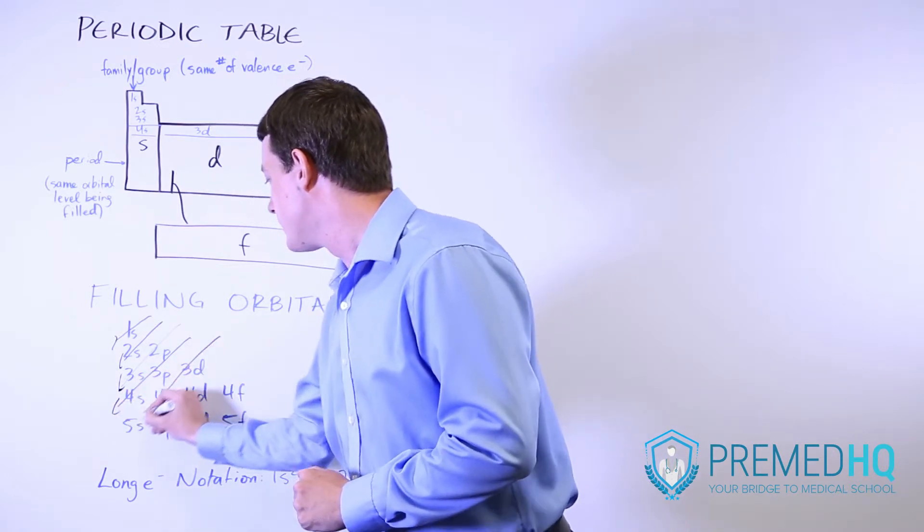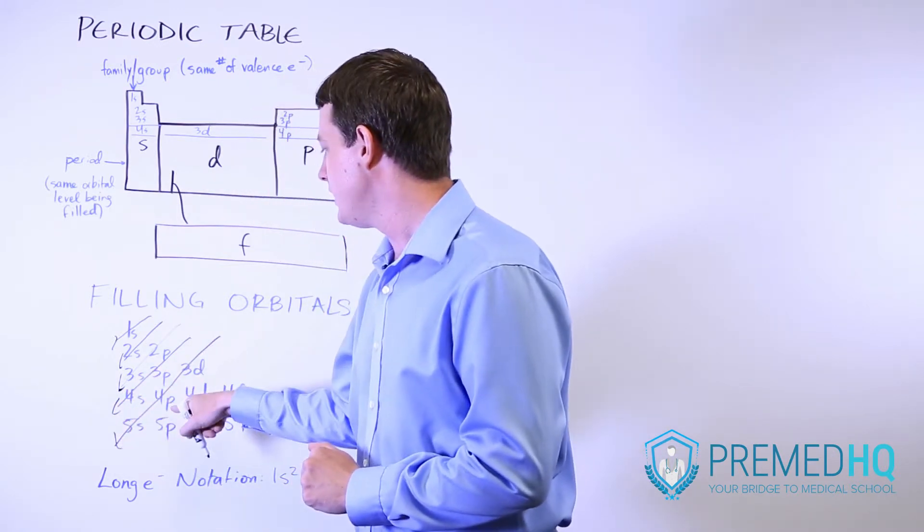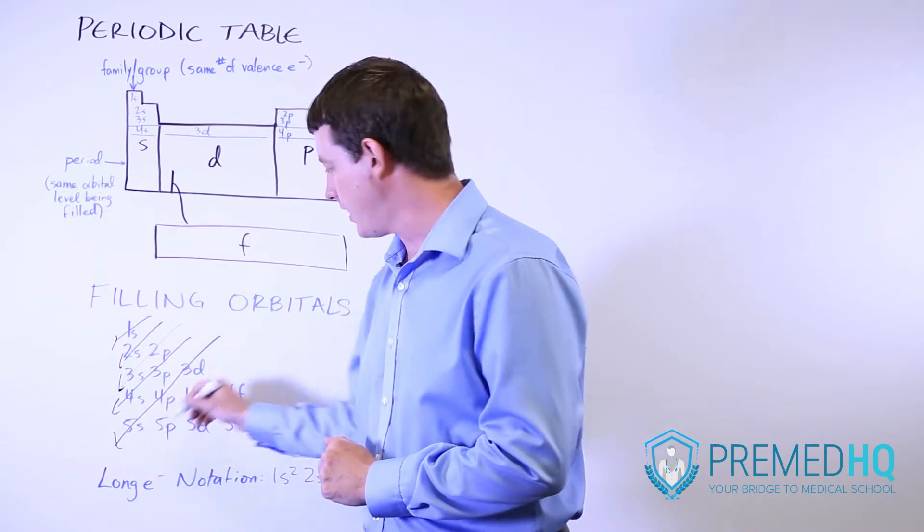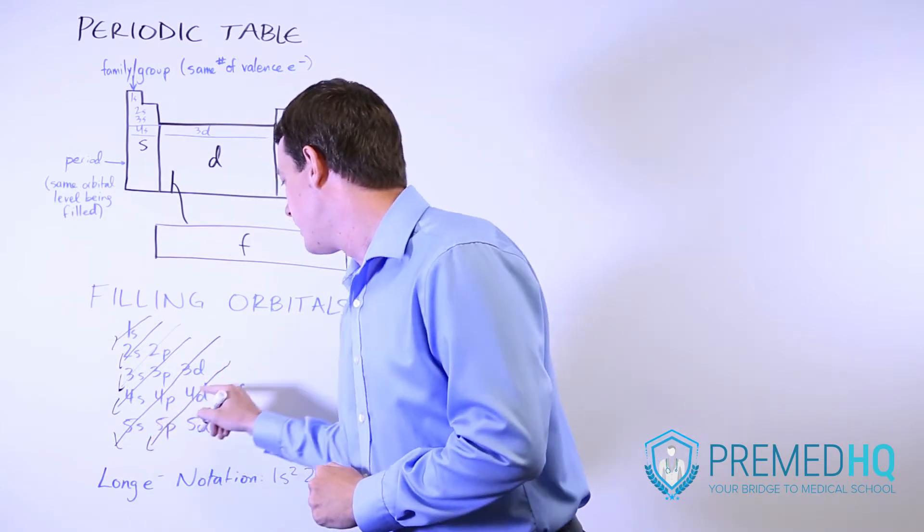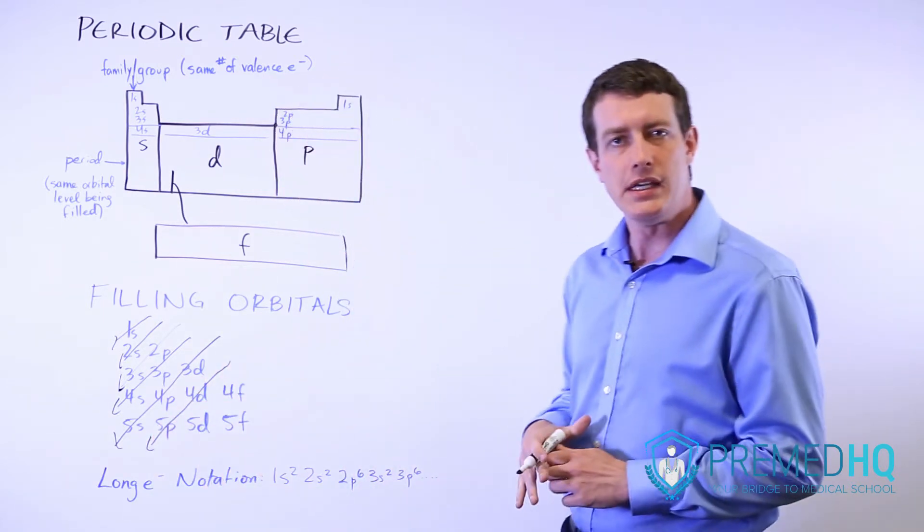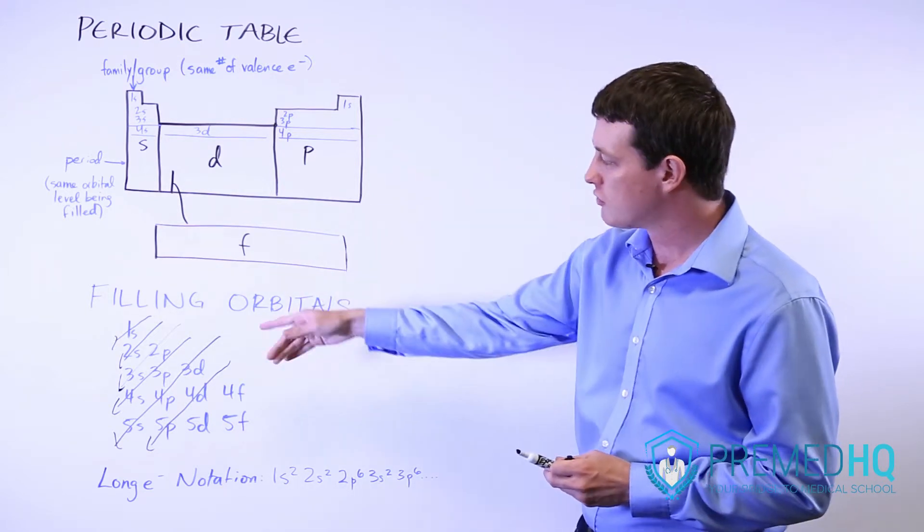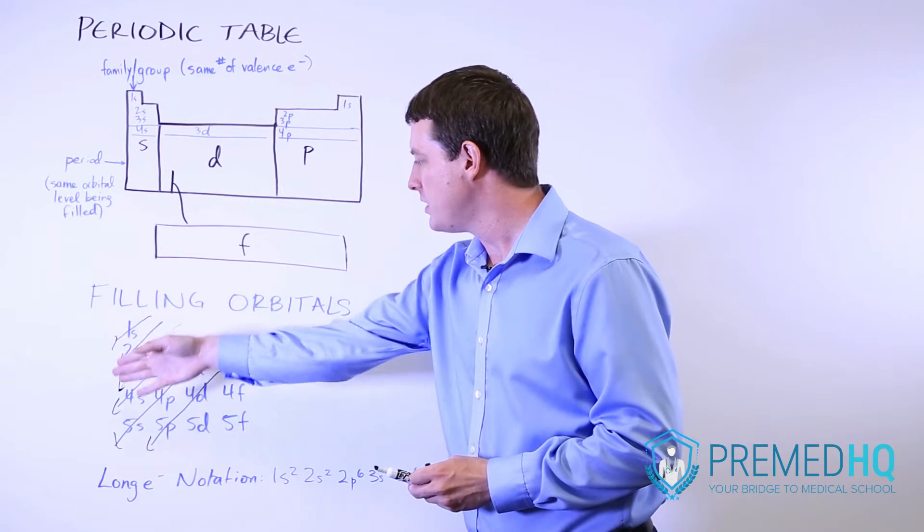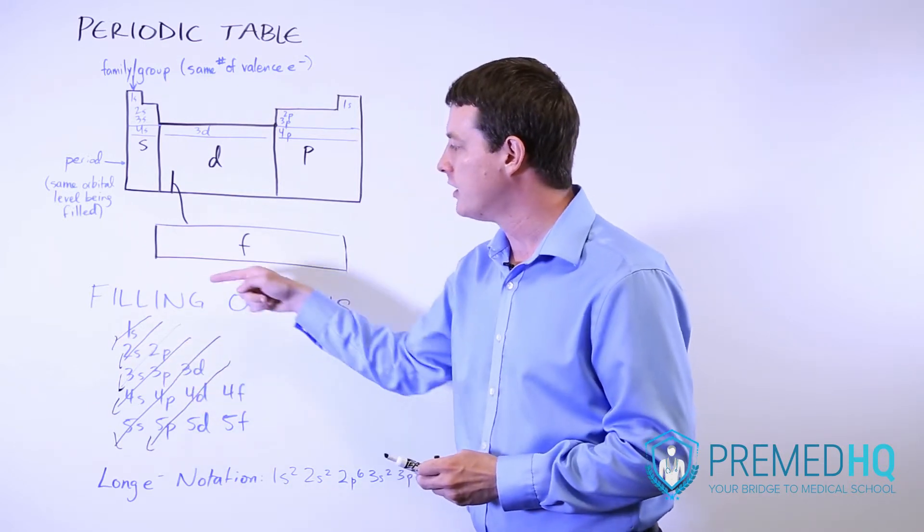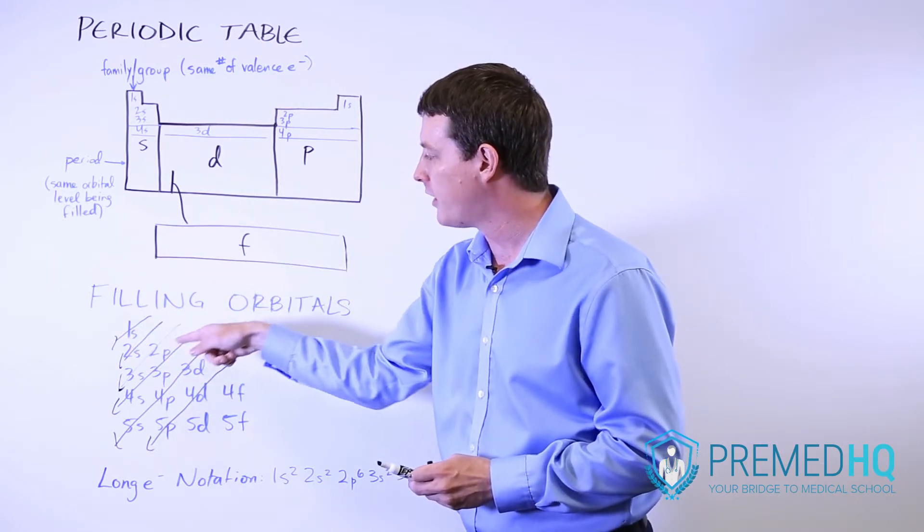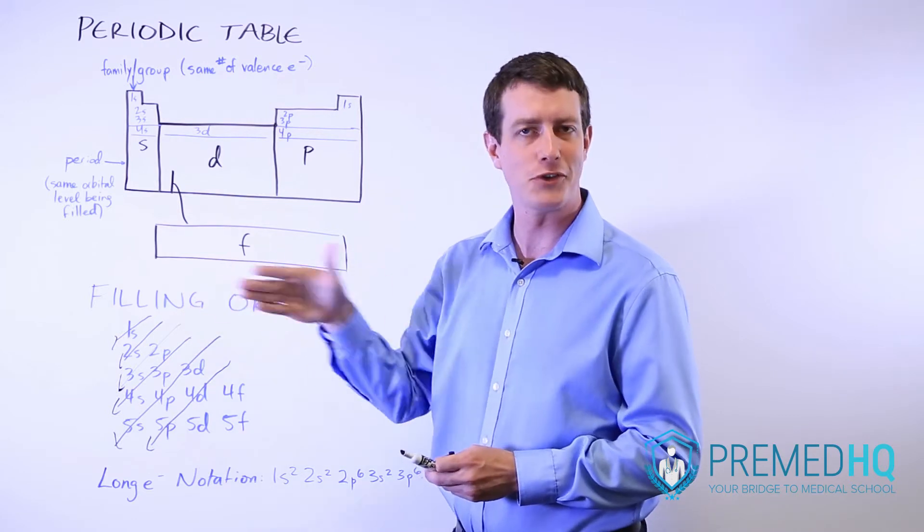Filling 3d, 4p and 5s, and then 4d before 5p. That's a really good way to keep track of how the orbitals are filled. You just draw out 1s, 2s, 2p and so on like I've done here, and then just draw diagonal lines down, and whichever one the line hits first is the one that's filled first.